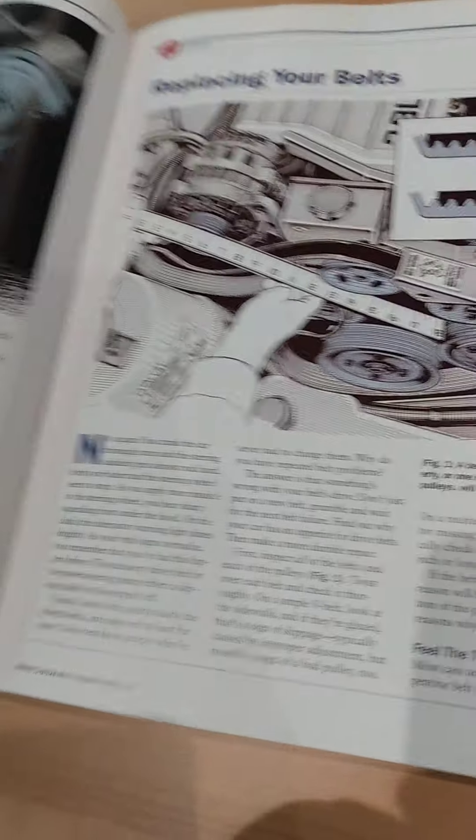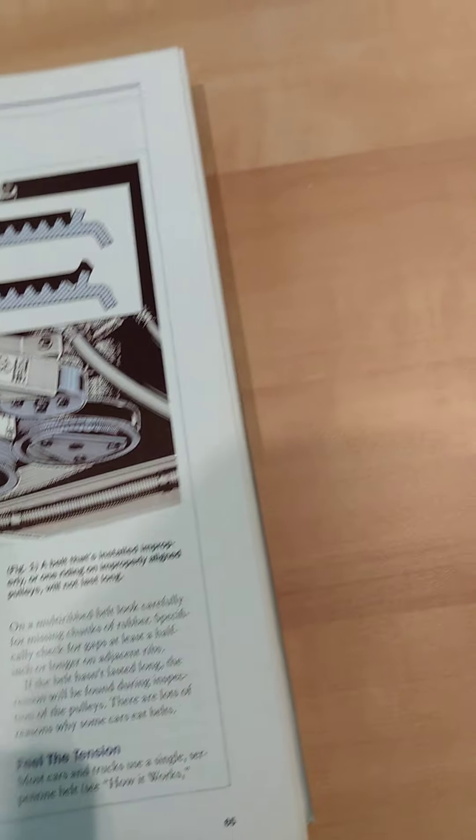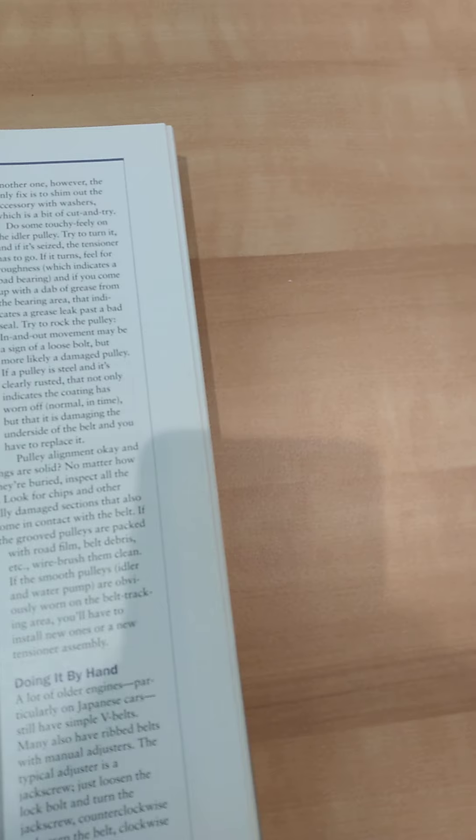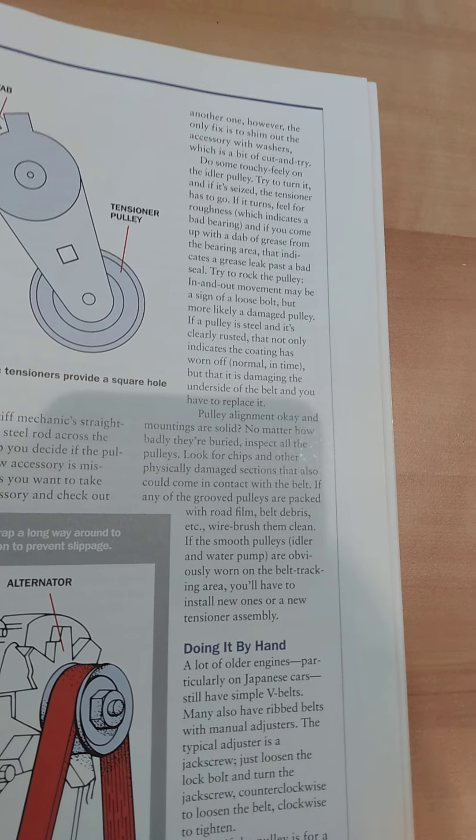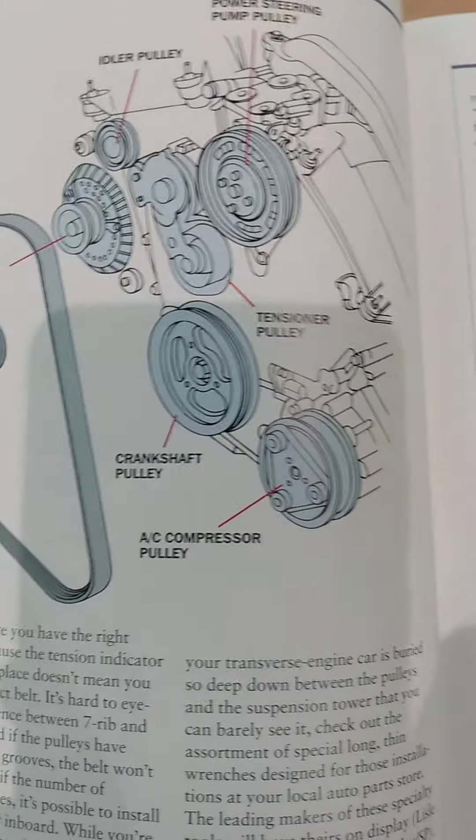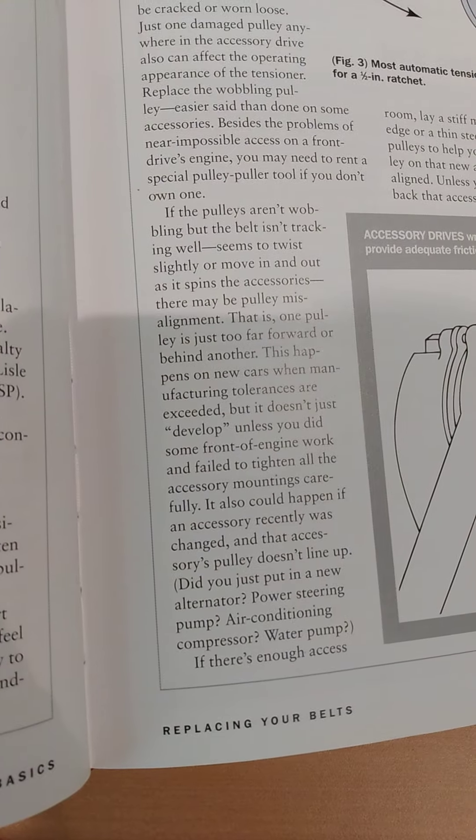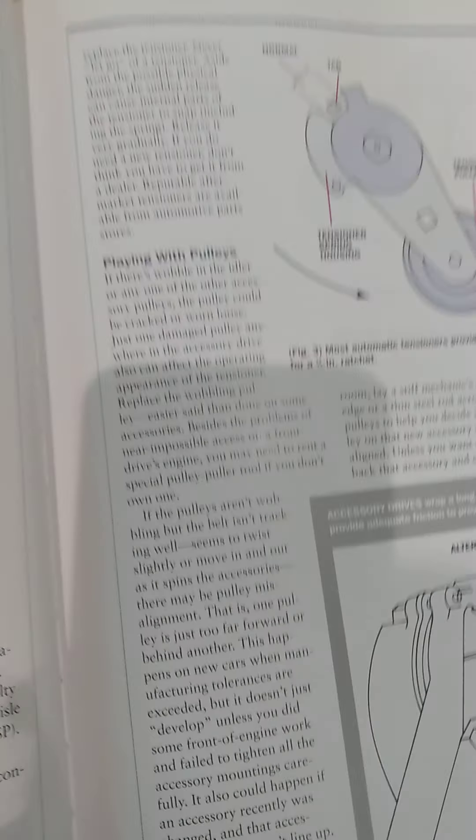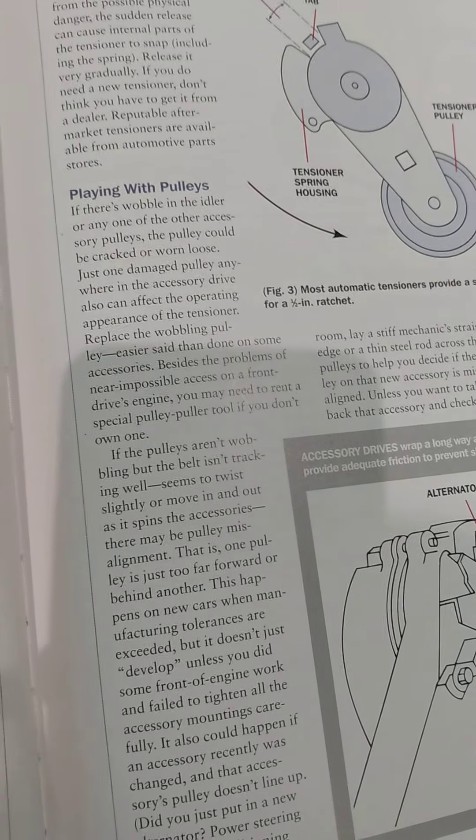So this looks like the alternator, could be wrong on that. And this is more where they're talking about the belt, the timing belt right here on the gears from turning the engine. So this is an alternator belt. This looks like the alternator belt, the pulley. Those are the gears for turning the engine.